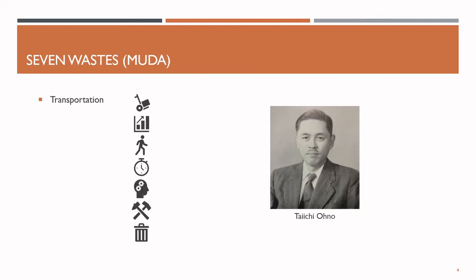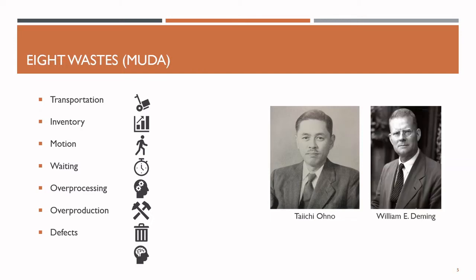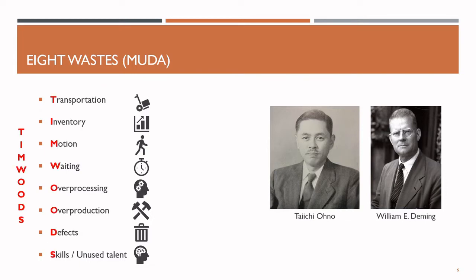Transportation, inventory, motion, waiting, over-processing, over-production, and defects. Americans – most probably the QM pioneer William Edwards Deming himself – later added to Ohno's list an eighth type of waste: skills or unused talent of your employees. You can remember the eight types of waste easily by using the catchphrase TIM WOODS. We will now discuss each of the eight wastes in more detail and give some examples.